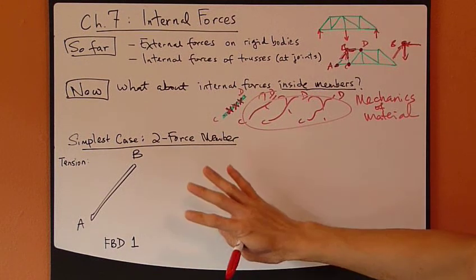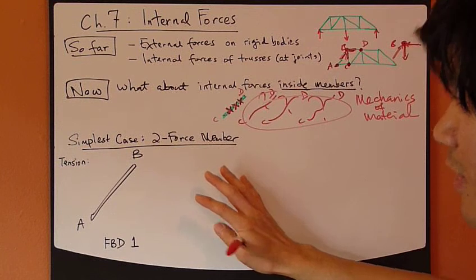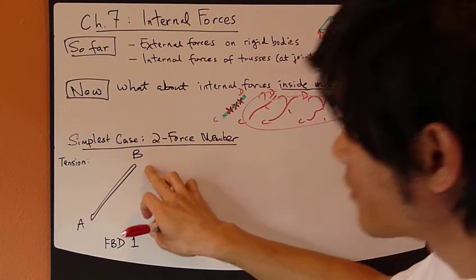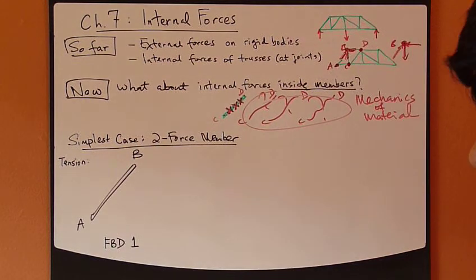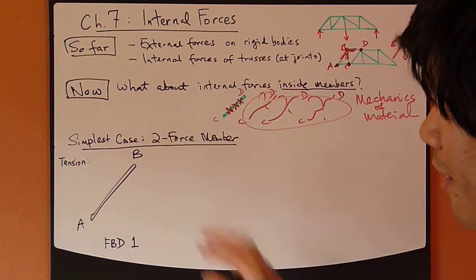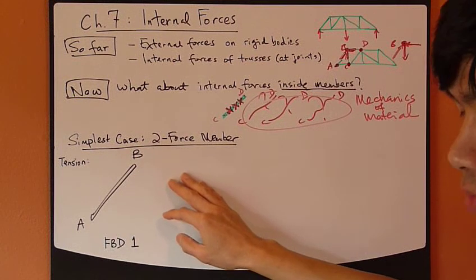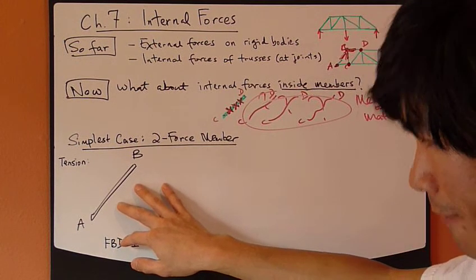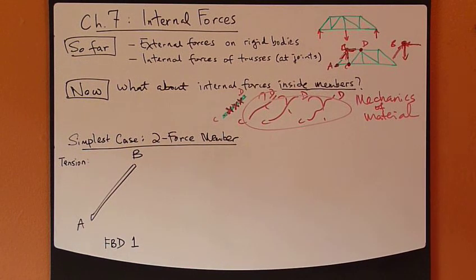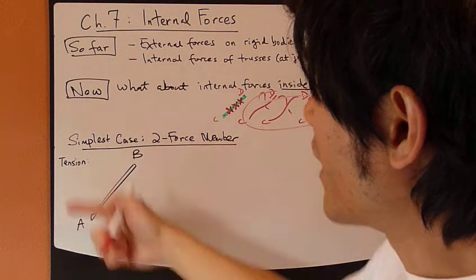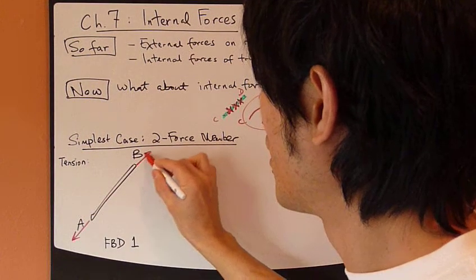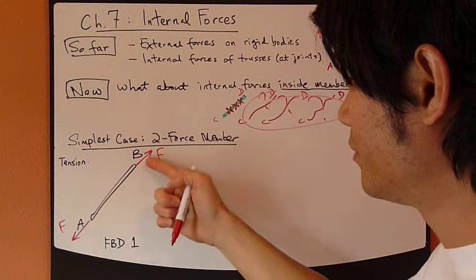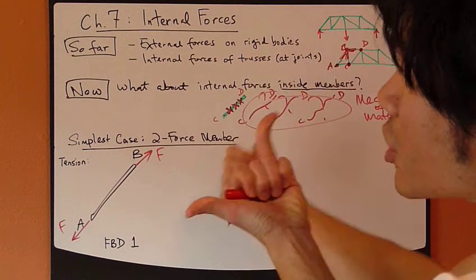The simplest case in analyzing an internal force is by considering a two-force member. Let's say I have a simple straight member AB subjected to two forces only. Since it's subjected to two forces, the only type of internal force that can exist is either compression or tension. Let's say AB is under tension, so for the free body diagram of AB I draw two equal and opposite forces F and F, which tend to stretch this member AB.